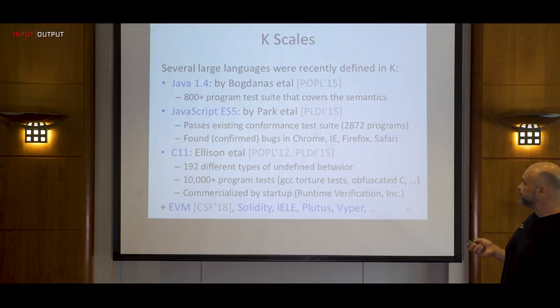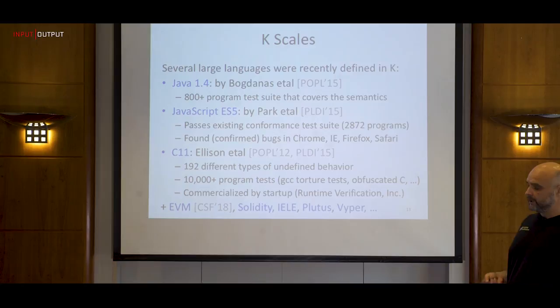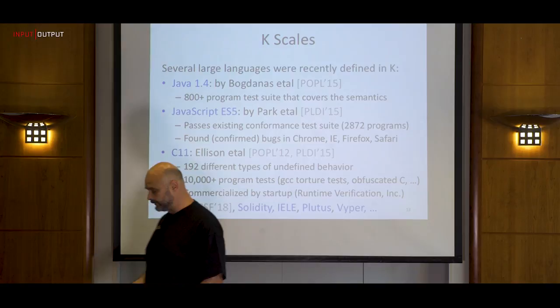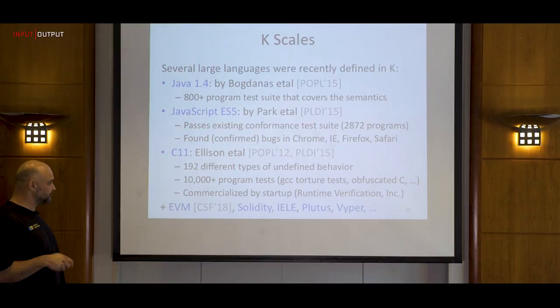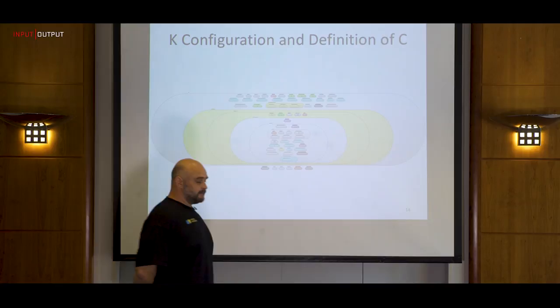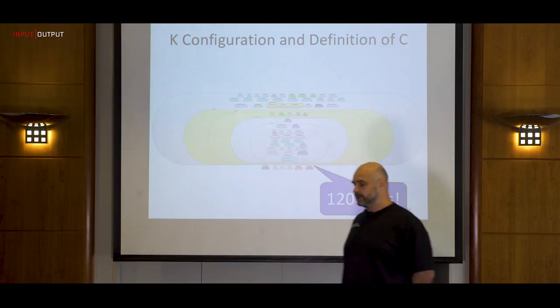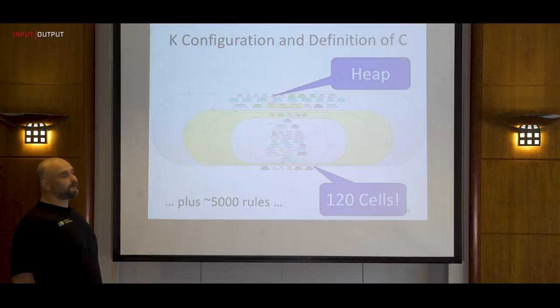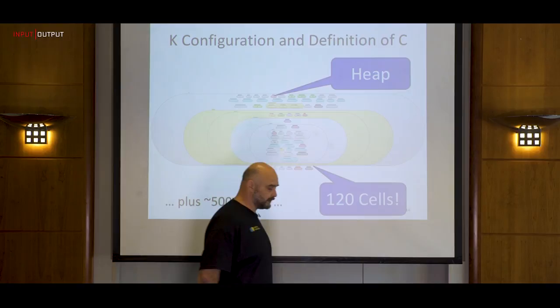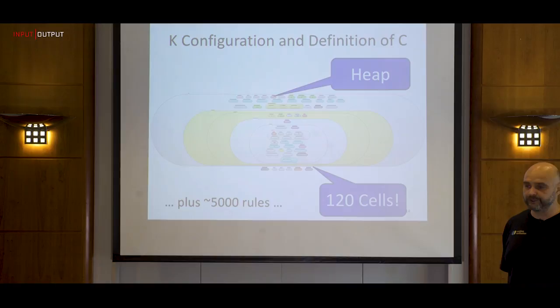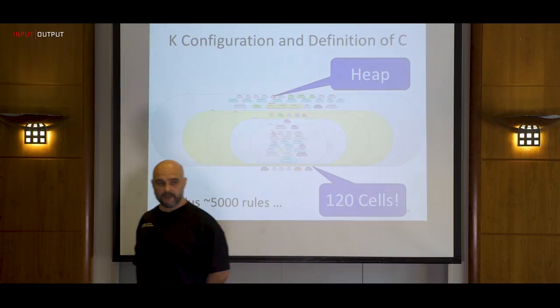We have also defined other languages motivated by formal verification efforts in the blockchain space, such as EVM, Solidity, IELE, Plutus, and Viper, which I'll talk about later. Program configurations can be quite large — the C configuration alone has more than 120 cells and more than 5,000 rules written by the user. It was a big effort, but it works, which is encouraging, because if it works for C it may work for any other language.